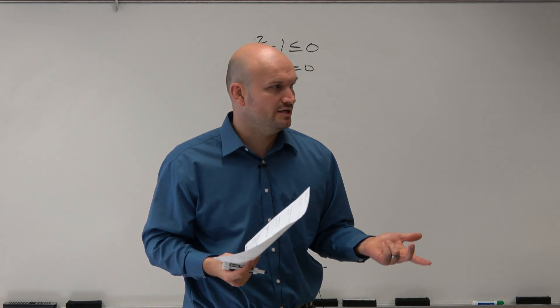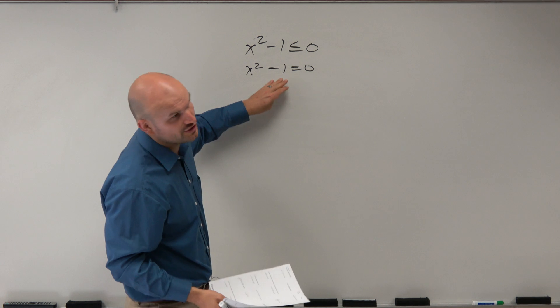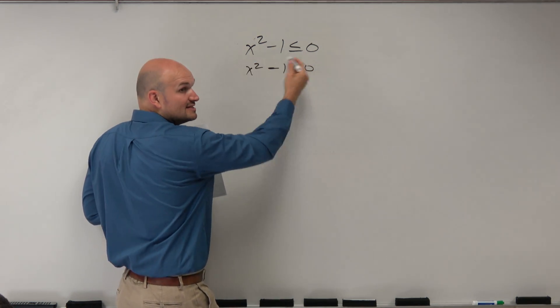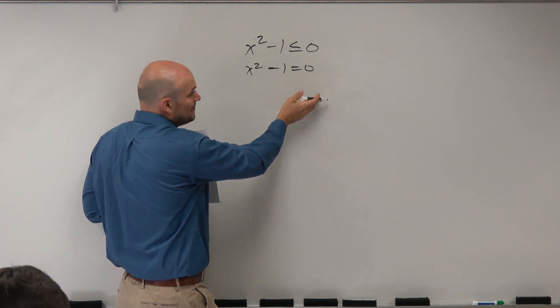And there's multiple different ways we could solve this equation. We could factor it using the difference of squares. We could add the one to the other side and then take the square root, which we call the square root property.